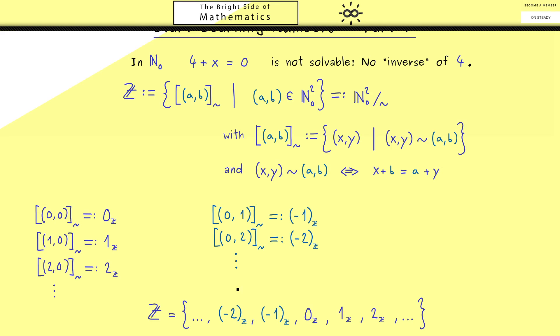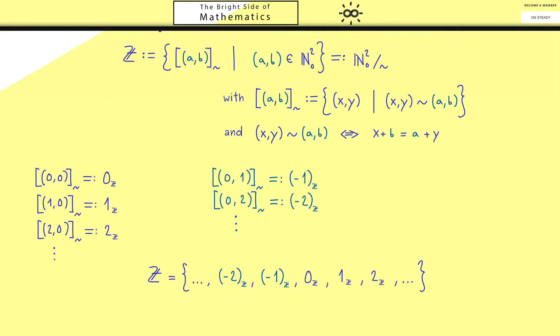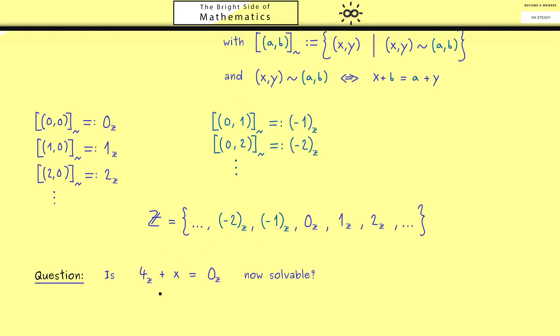At this point, the natural question should be: can we now solve the equation from the beginning? More correctly, we should now formulate the question in ℤ. Is 4 + x = 0 now with numbers in ℤ solvable? Moreover, in the case it actually is, is the solution then given by -4? However, at this point you are critical enough to say wait a moment, we first have to define the plus sign for the new set.